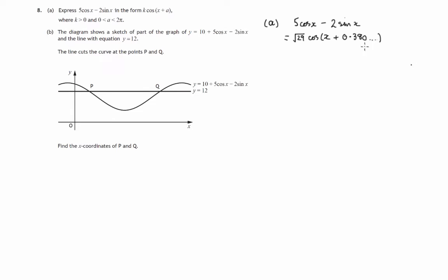There's the answer that we got from part A. Part B shows us the graphs of two functions. So the first graph y equals 10 plus 5 cos x minus 2 sin x, this sinusoidal curve here. The second graph is straight line y equals 12. And we're asked a question about the points of intersection P and Q to find their x coordinates.